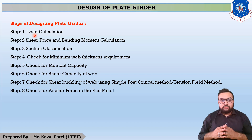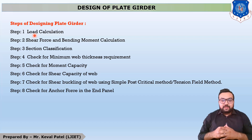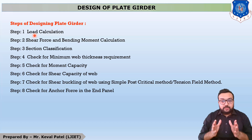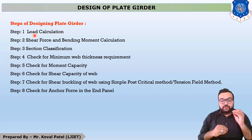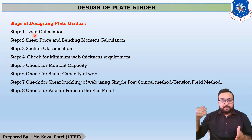Step number three: after finding out shear force and bending moment in step two, you have to choose a selected section such that it will resist the maximum bending moment and maximum shear force generated in step two. It is not compulsory that your selected section is safe or unsafe at this point — this is a trial and error section.